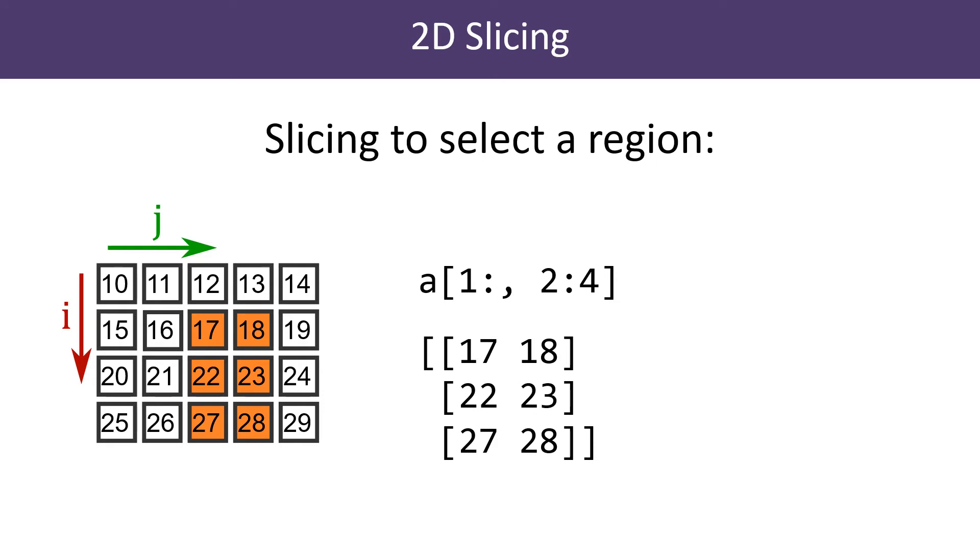We can select a region by slicing the rows and columns independently. In this case, the row slice is [1:], which slices from element 1 to the end of the array, that is the second, third and fourth rows.